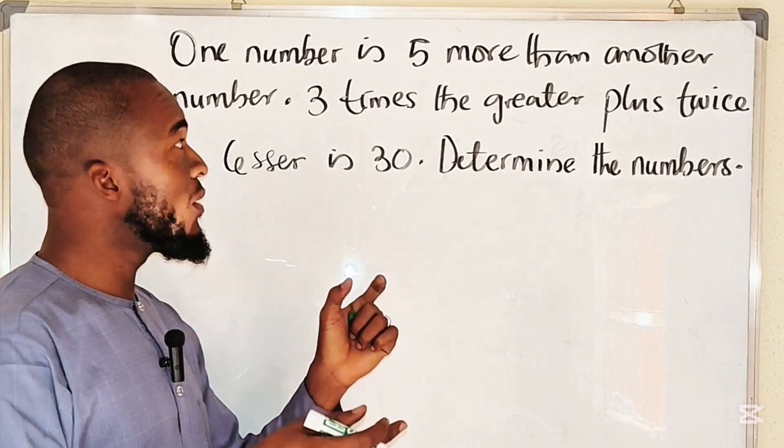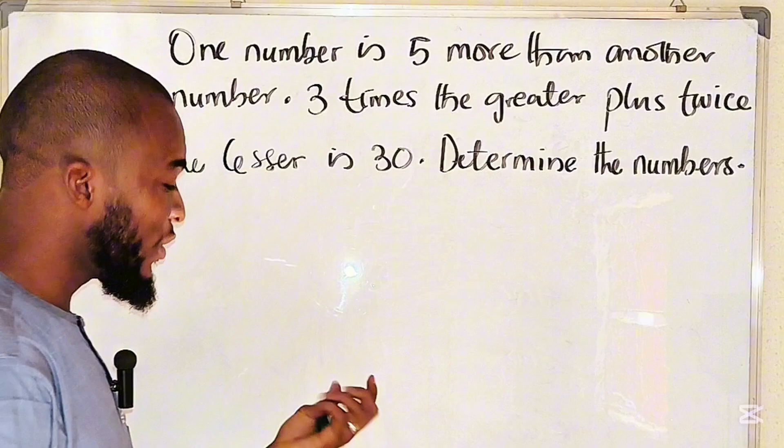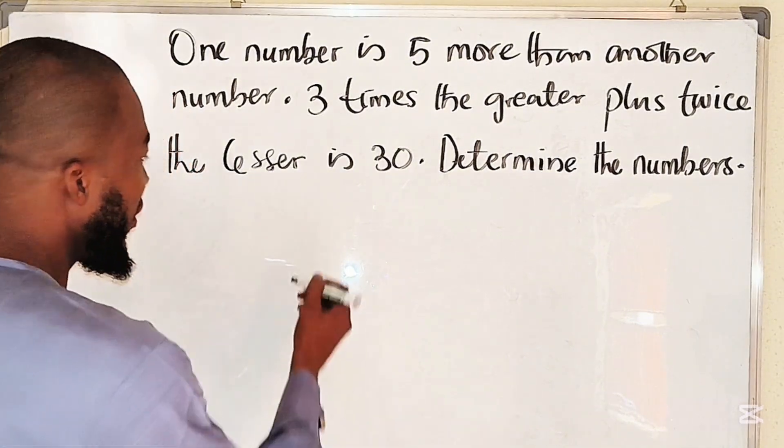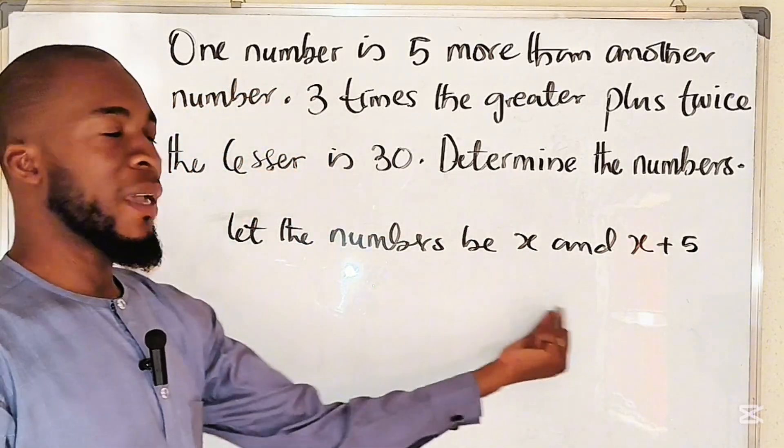Because according to the question, one is five more than the other. So the smaller one is x and the larger one is x plus five. So the two numbers are x and x plus five.